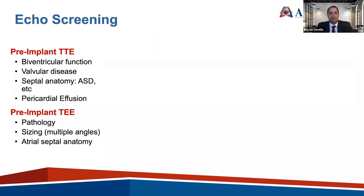Prior to approaching appendage occlusion, we do a pre-implant transthoracic echo. I'm specifically looking for biventricular function, valvular disease — specifically rheumatic mitral valve disease (which would contraindicate LAA occlusion) — septal anatomy including any large ASD, septal occluder, or pericardial patch, and whether there's a pericardial effusion. Many centers also do a pre-implant transesophageal echo to screen for pathology, size the left atrial appendage, and look at atrial septal anatomy.